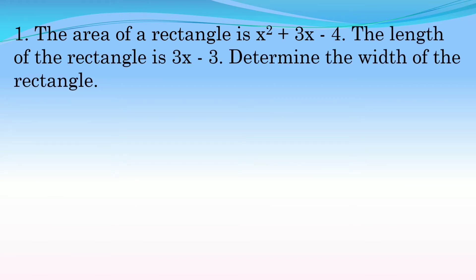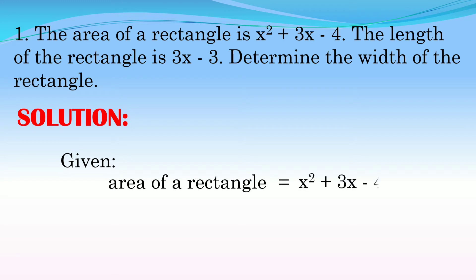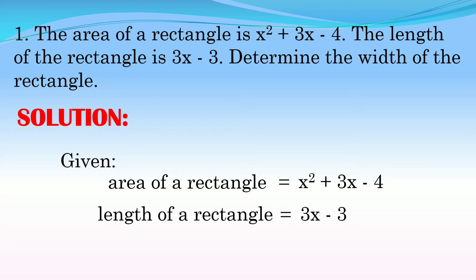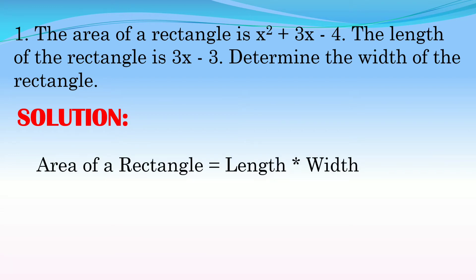So let's solve. The area of a rectangle is x squared plus 3x minus 4, and the length of the rectangle is 3x minus 3. Determine the width of the rectangle. Solution: the given area equals x squared plus 3x minus 4, and the length equals 3x minus 3. We are looking for the width of the rectangle, and we will apply simplifying rational algebraic expressions to this problem.